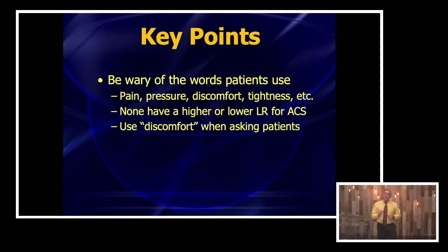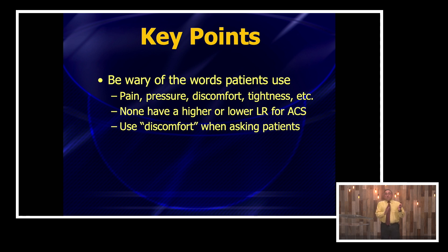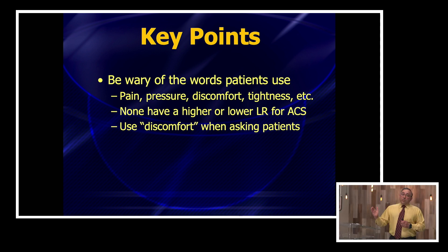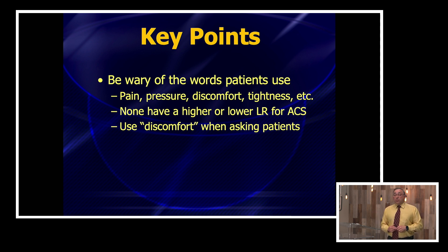First of all, you need to be wary of the words that patients use. Sometimes people say chest pain, sometimes chest pressure, squeezing, tightness. People use all kinds of words — sometimes the word sharp. The traditional literature has said that sharp implies lower risk and pressure implies higher risk. Well, recent literature has shown that none of those words really portend an increase or decrease in likelihood for ruling in ACS. So you can't put too much stock in the words that patients use.